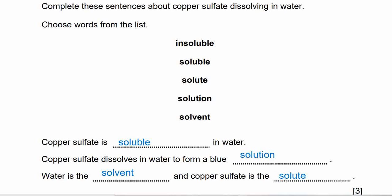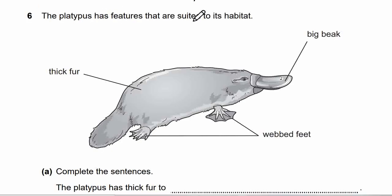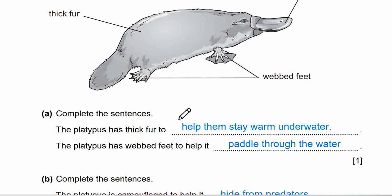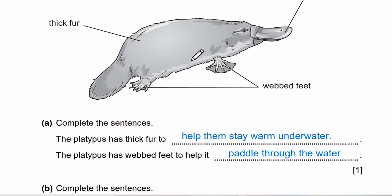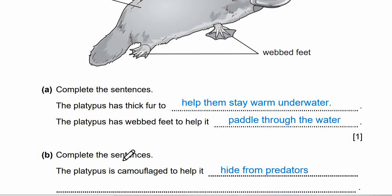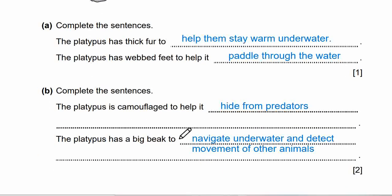Question 6 is about the platypus, which has features suited to its habitat: webbed feet and thick fur. The platypus has thick fur to help it stay warm underwater. It has webbed feet to help it paddle through the water. Question B: the platypus is camouflaged to help it hide from predators. The platypus has a broad beak to navigate underwater and detect movement of other animals.